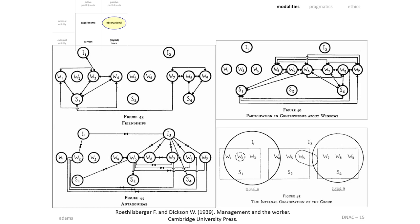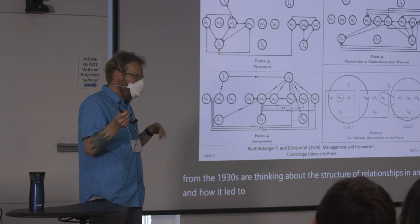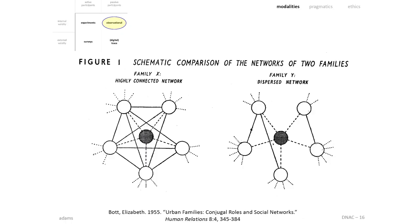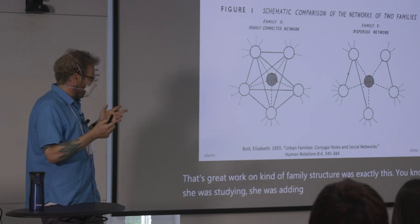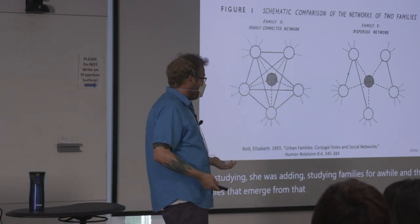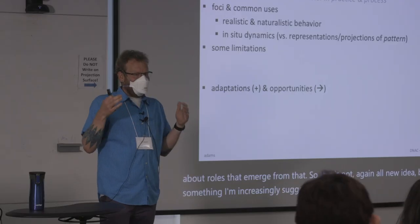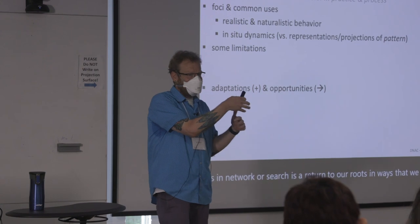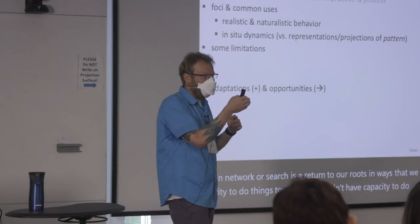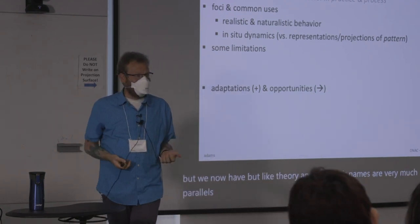A classic example is the bank wiring room from the 1930s — thinking about the structure of relationships in an office and how it led to performance and friendships. Elizabeth Bott's work on family structure was exactly this: she was embedded in studying families for a while and thinking about roles that emerged from that. This is not a new idea, but I'm increasingly suggesting that one of the biggest frontiers in network research is a return to our roots — we have capacities today we didn't have then, but the theory and aims are very much paralleling where the field started.